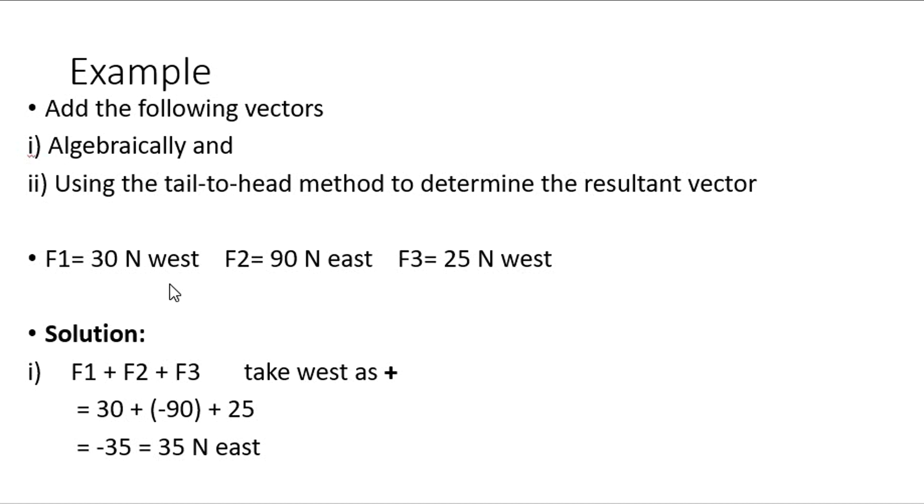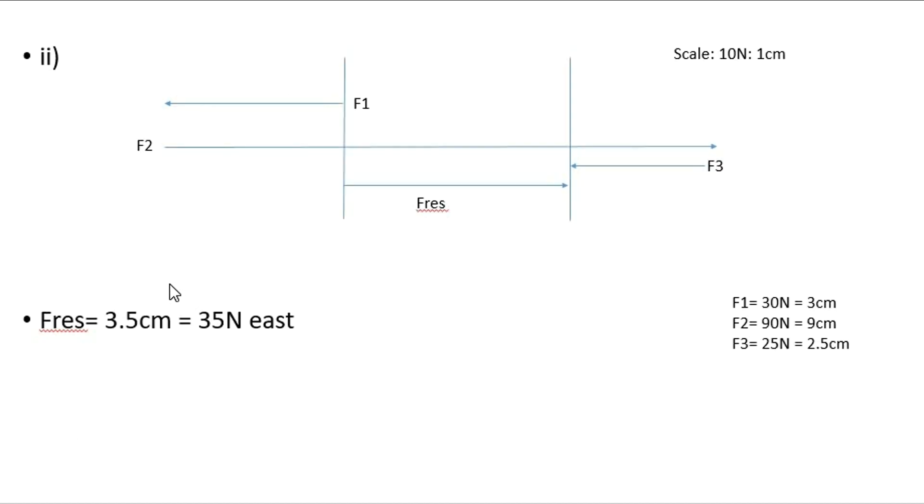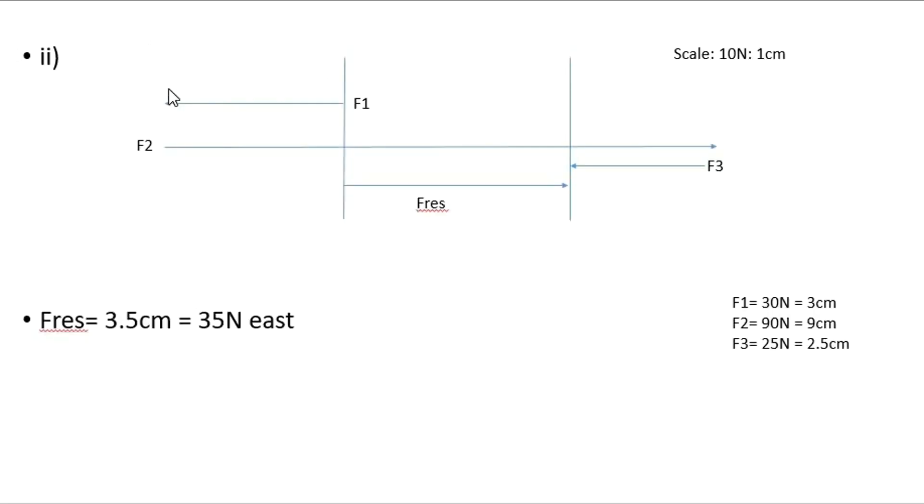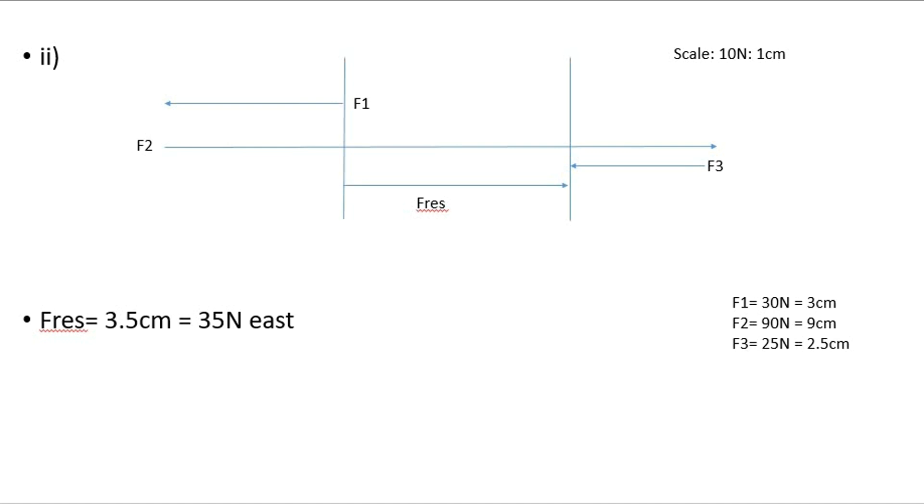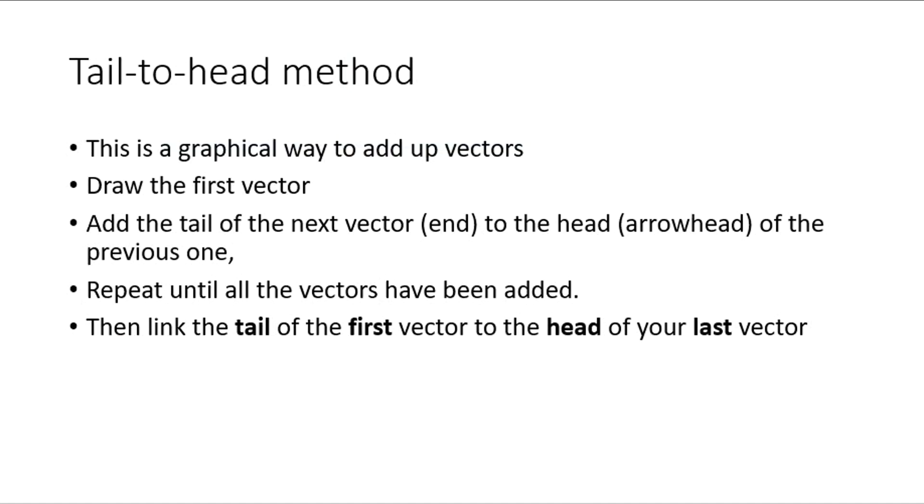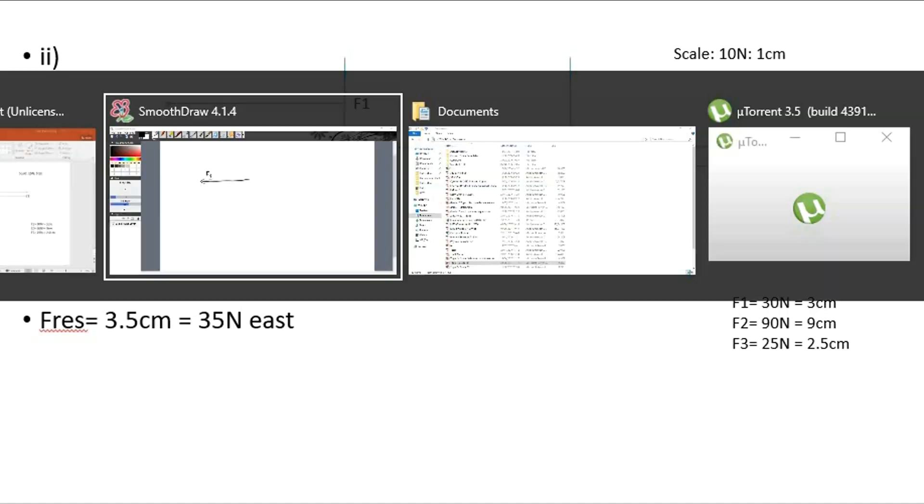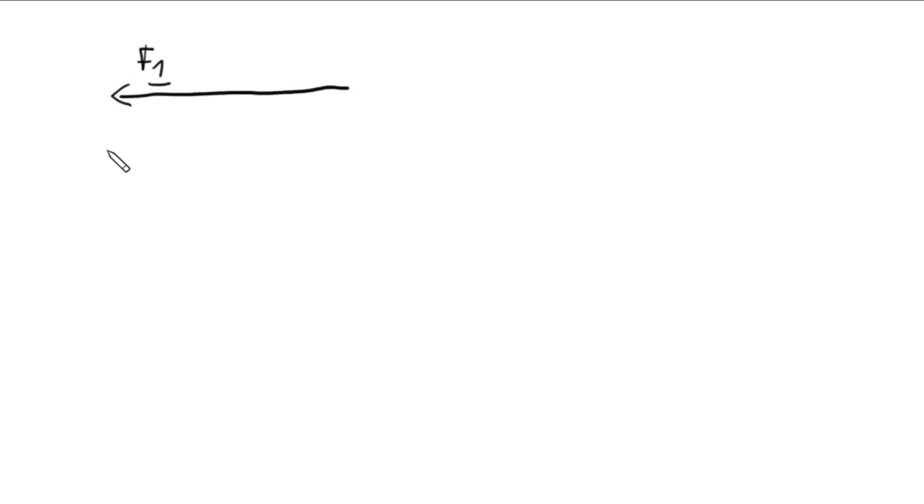Now, the tail-to-head method is where it gets a little bit more tricky. First we need to draw our vectors. Our first vector has already been drawn in this case, so let's draw our vector. Then we're going to take the tail of our next vector and put it to our first one, just like we did before. Add the tail of the next vector to the head of your previous one. So let's do that. Our next vector is quite a large one, F2.